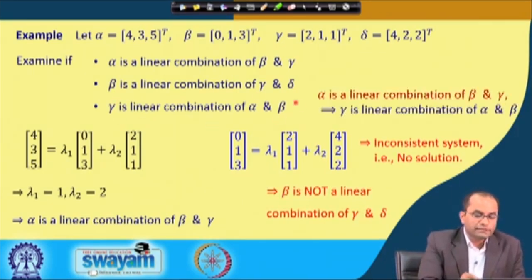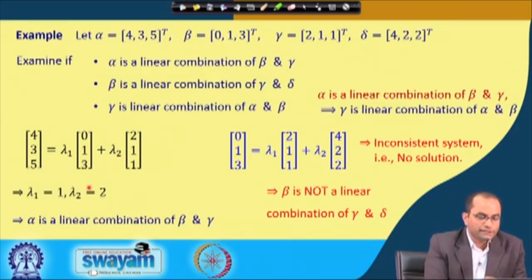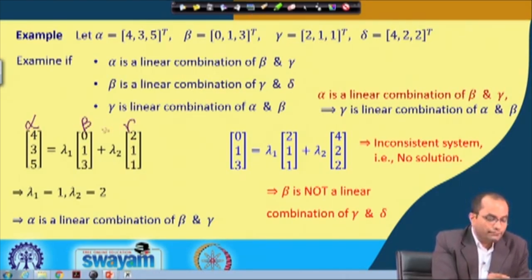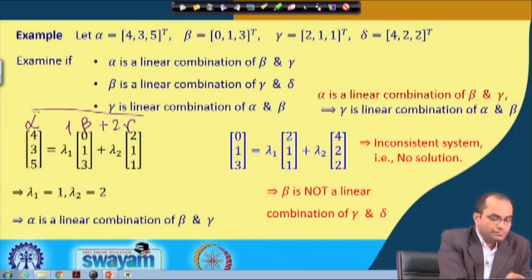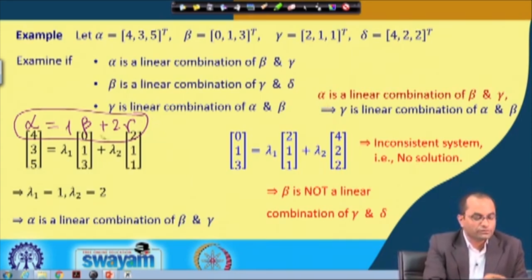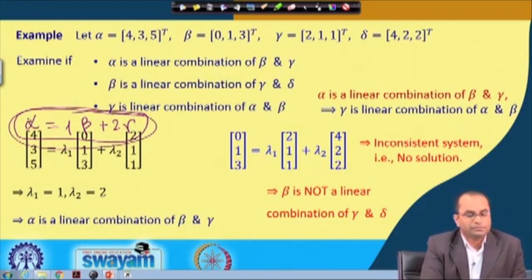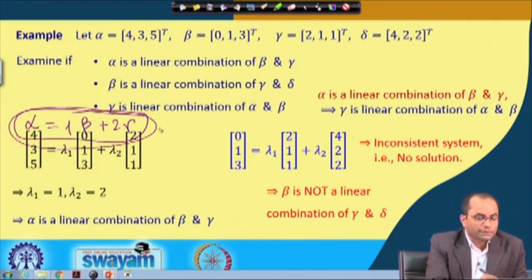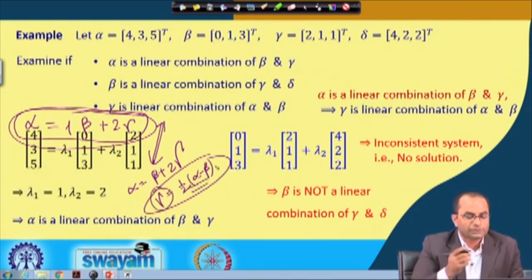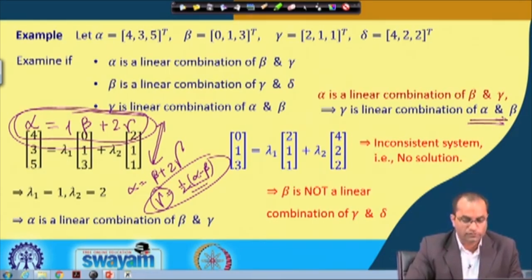For the third question, gamma is a linear combination of alpha and beta. We already showed in part one that alpha = beta + 2 * gamma. Rearranging this gives gamma = (1/2) * alpha − (1/2) * beta. So gamma is trivially a linear combination of alpha and beta, which follows directly from the result in part one.